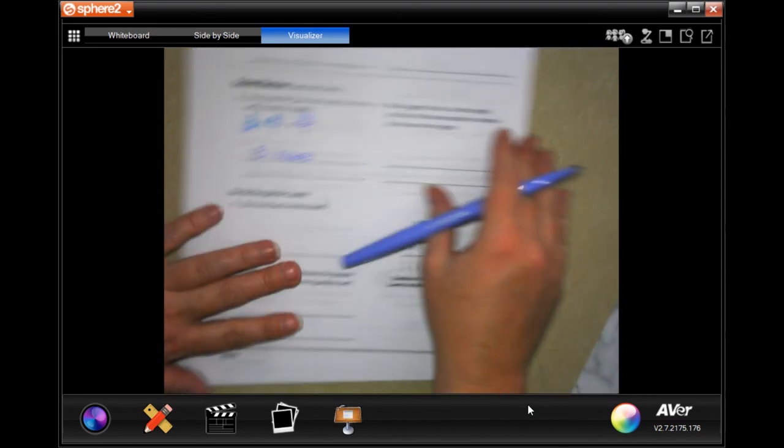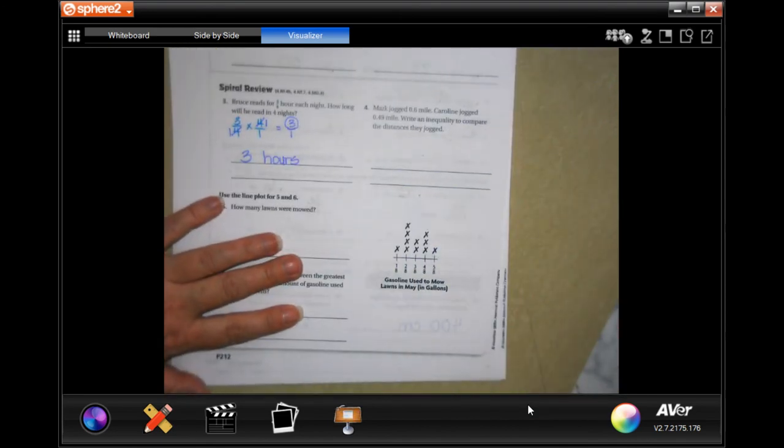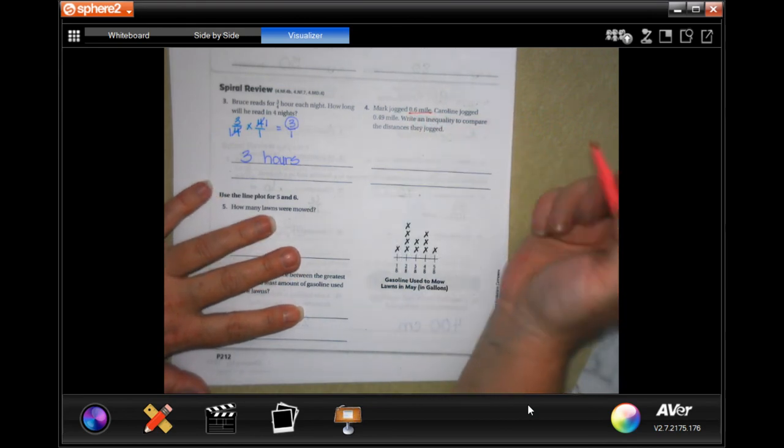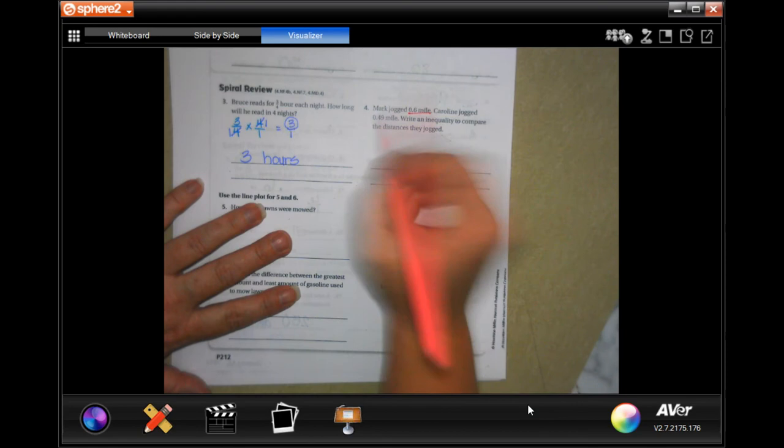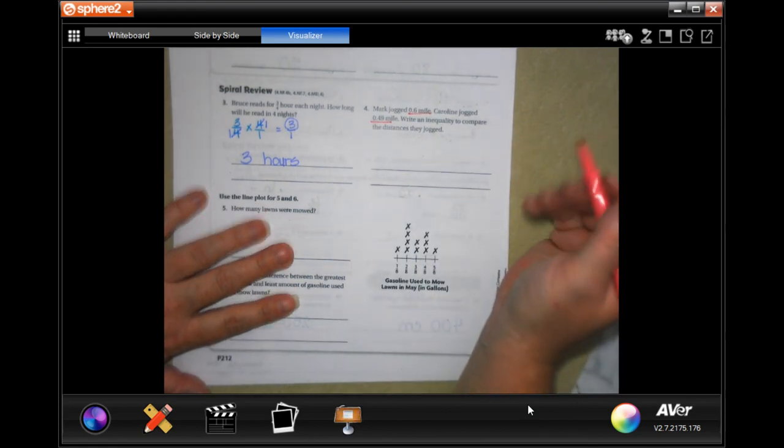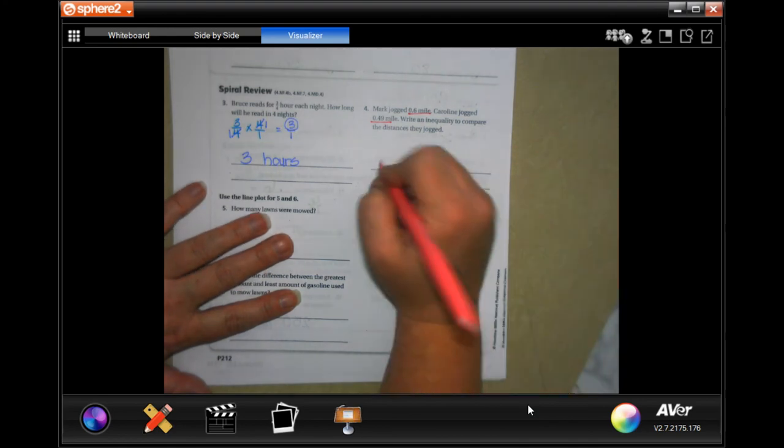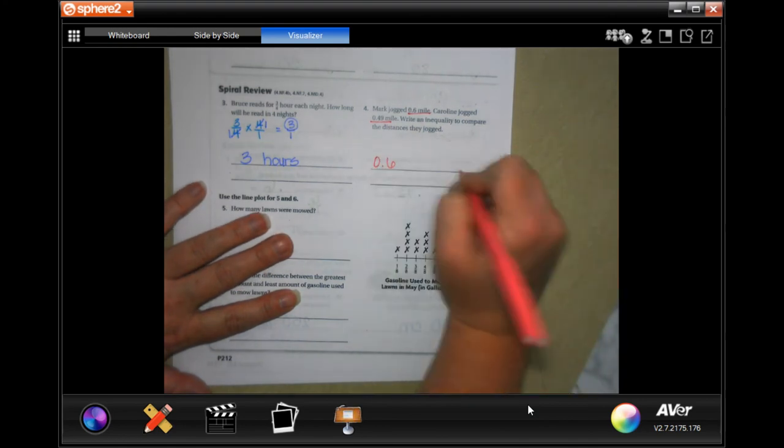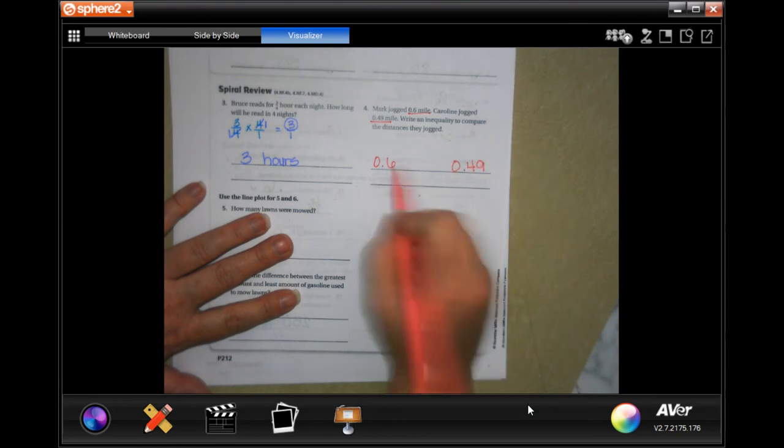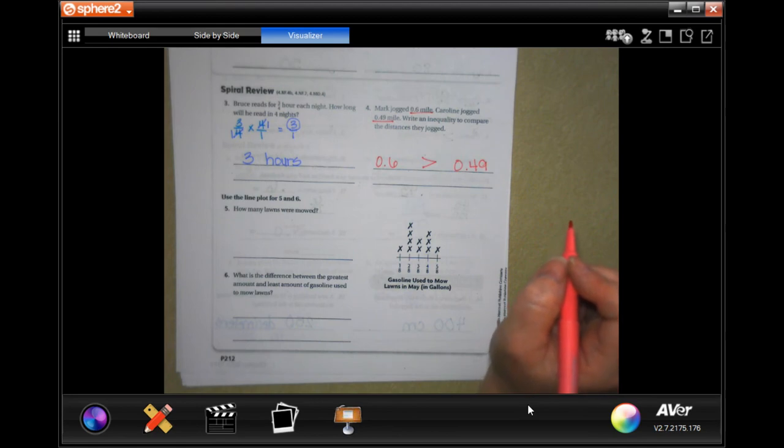Mark jogs a sixth of a mile or six tenths of a mile. Caroline jogs 49 hundredths of a mile. Write an inequality to compare the distances they jog. Well, we have 0.6 and we have 0.49, and you will notice that a six is bigger than a four, which means 0.6 is greater than 0.49.